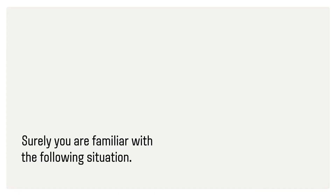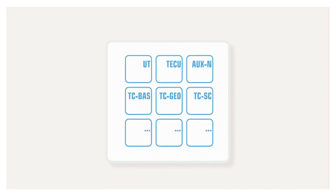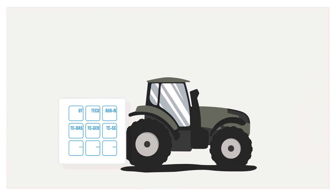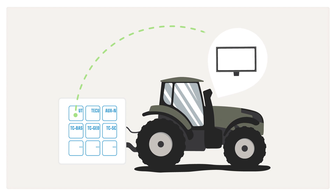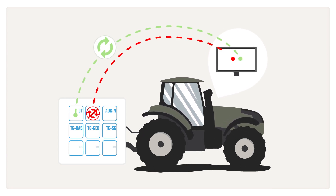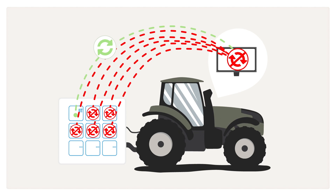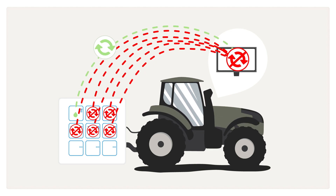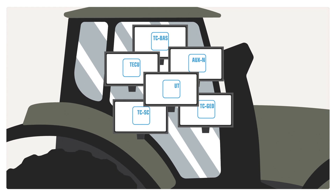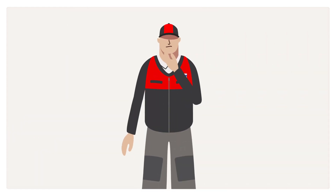Surely you're familiar with the following situation. Isobus functionalities are continually increasing, and implements can do more and more. However, if a terminal can't read all the standards, the implement won't work properly. Or you need to use a dedicated terminal for each implement. What to do?